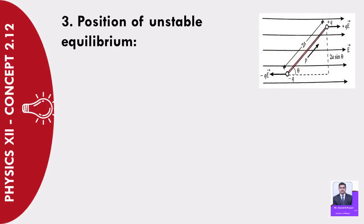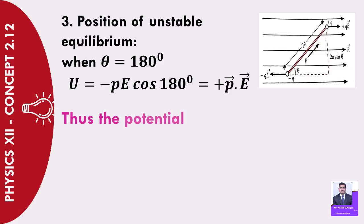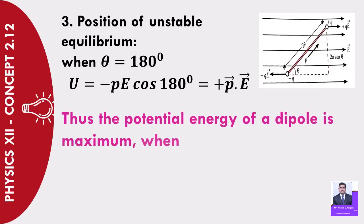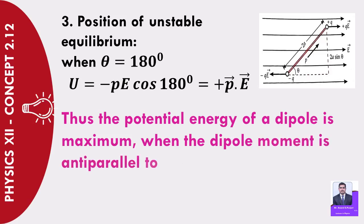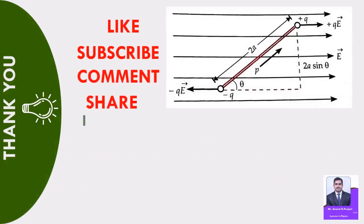Case 3 — Position of unstable equilibrium: when θ = 180°, U = −PE·cos 180° = +P·E (maximum value). Thus the potential energy of a dipole is maximum when the dipole moment is anti-parallel to the external field. This is the position of unstable equilibrium.